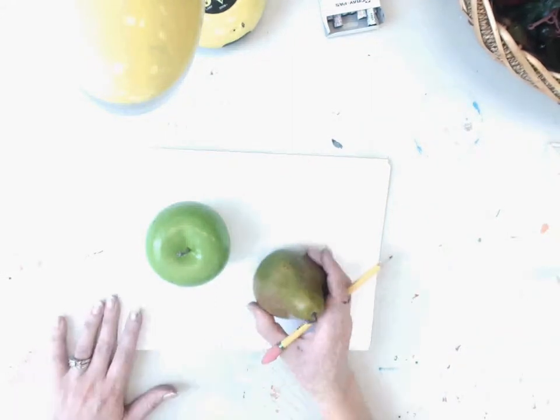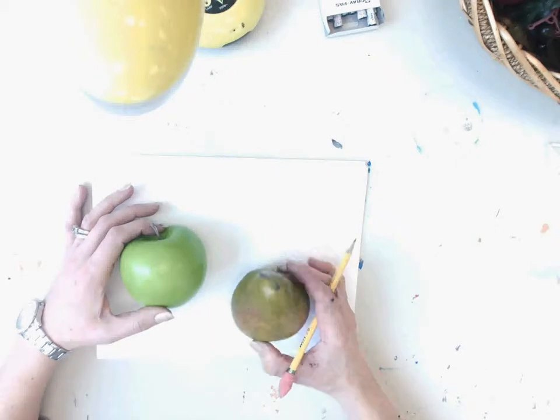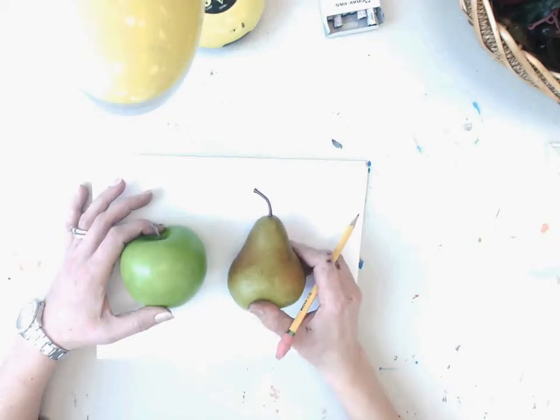So we're going to draw some fruit for our still lives. We're going to draw two different fruit: an apple and a pear for our still life.